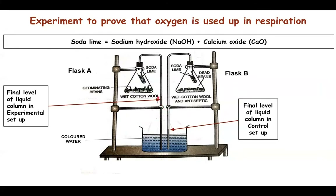Once oxygen is used, it helps in the synthesis of carbon dioxide through the process of respiration. The carbon dioxide is absorbed by soda lime, and the partial vacuum created makes the water column rise in the bent tube attached to flask A.